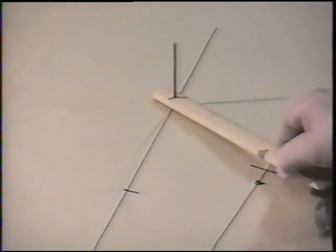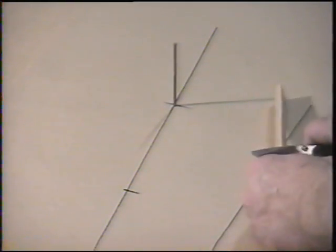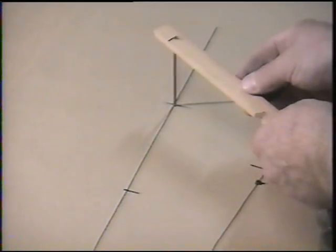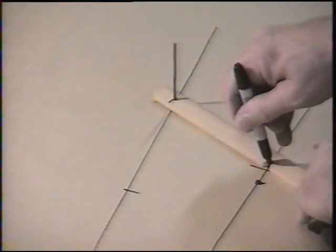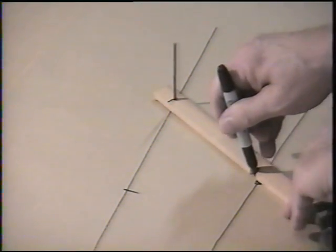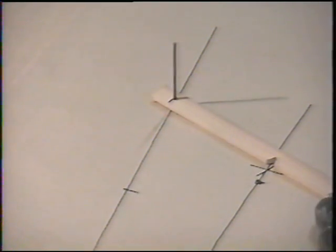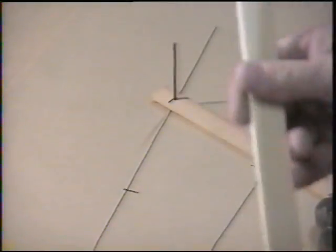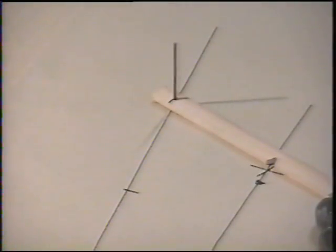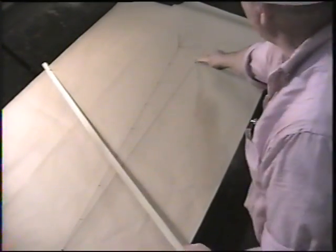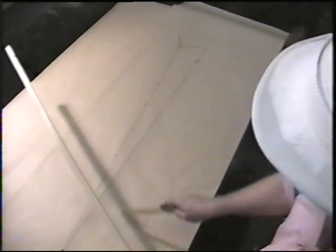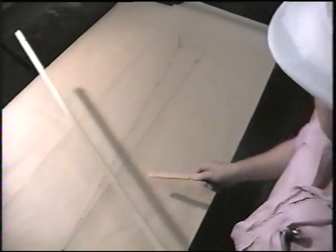These two sticks - the long one and the short one - will help you make an angled line exactly the same angle and dimension as the one on top.